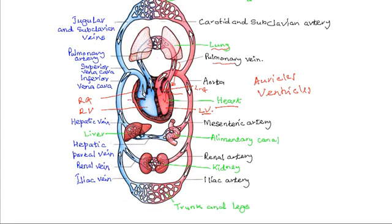Then the left ventricle pumps the blood out of the heart through the major artery known as the aorta. The aorta divides into carotid and subclavian arteries that take blood to the head and upper arm region.